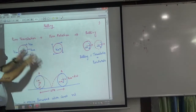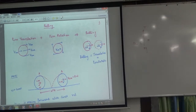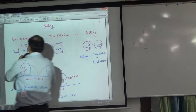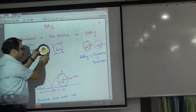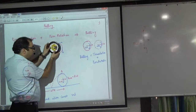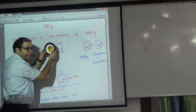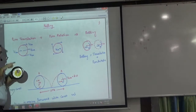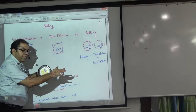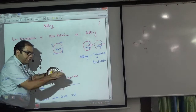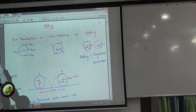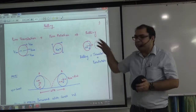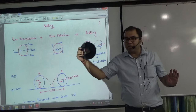Now imagine this tire is not rotating. This time it's just sliding forward — not spinning at all. Suppose this tire is moving like a block. It's just sliding. The center of mass is in motion. If the tire is going forward at 10 meters per second, every particle is also going at 10 meters per second. This is pure translation. Two motions are now clear.